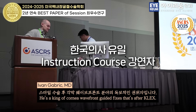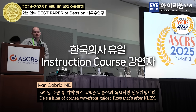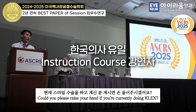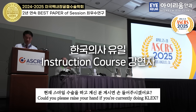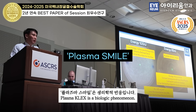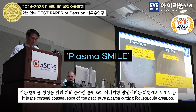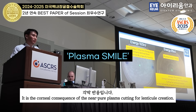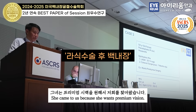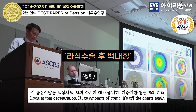The interesting aspect of corneal changes from SMILE is our focus. Could you please raise your hand if you are actually doing SMILE? Plasma SMILE is a biological phenomenon — it is the corneal consequence of pure plasma cutting for lenticule creation. Plasma SMILE produces a gradient effect. Look at that decentration.